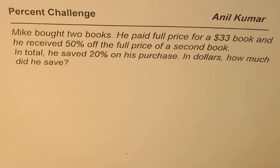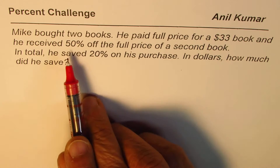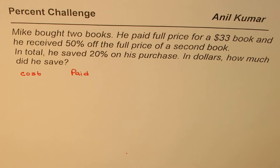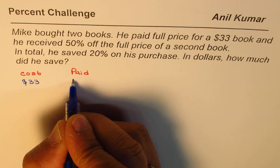What we're talking about in this particular case is that Mike bought two books: one at full cost and the other at a 50% discount. Let's write down the cost of the books and what Mike paid. The cost of the first book is $33 and he paid the full price, that is $33.